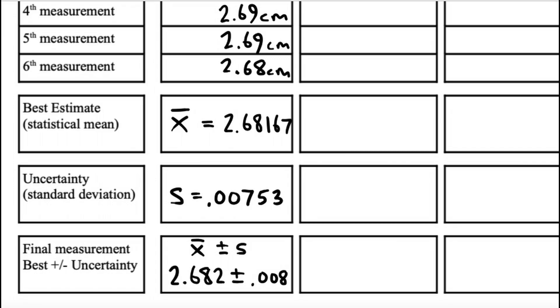So my mean is 2.68167. You can keep more digits than you need for this row here. Your uncertainty is going to be the standard deviation, which was the s value. And that was 0.00753. Then you want to give your final result for that measurement. So the way we do that is we're going to say it's going to be the best estimate plus or minus the standard deviation. So let's write 2.682 plus or minus 0.008. Now let's talk about why I chose those number of digits.